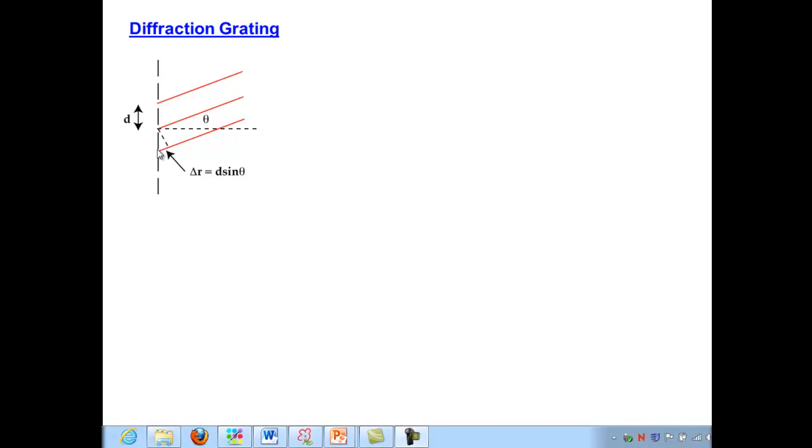If you make that little triangle, as we did back when we were dealing with the case of double-slit interference, if d is the spacing between two adjacent slits, then the angle theta is the same as the upper angle in that small right triangle.